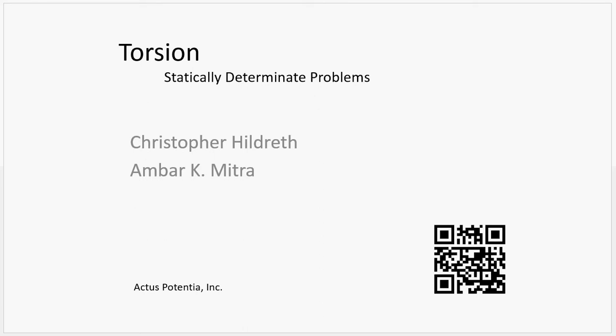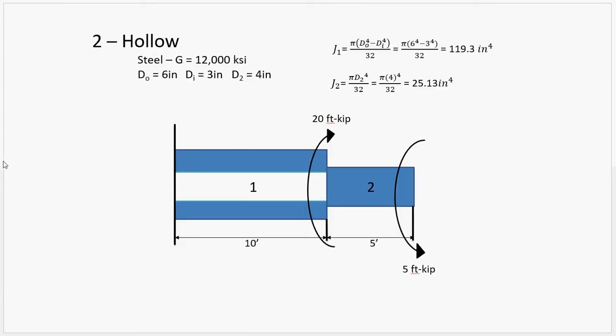Hello, in this video I'm going to solve a statically determinate torsion problem. This problem is going to show how you work with a hollow cylinder. As you can see when looking at our shaft, our shaft has two obvious segments, the first one being a hollow segment and then followed by a smaller diameter solid segment.